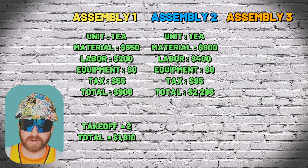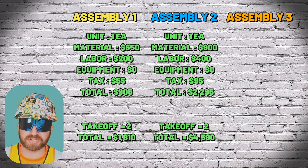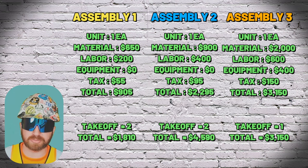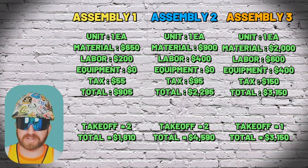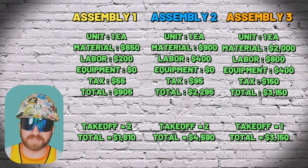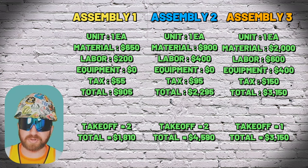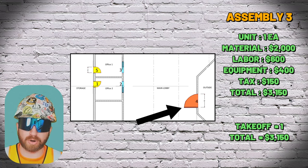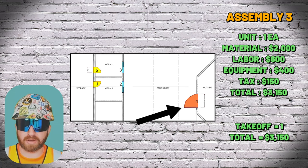Assemblies relieve estimators from reinventing cost estimates, as they can click and find typical assemblies used in typical construction projects. As you estimate more projects, you can build up your library of assemblies. You'll have to adjust unit rates within those assemblies as prices in construction change. If an assembly doesn't exist or it's a unique condition, you just create one and then enter quantities against it.